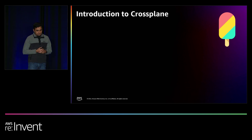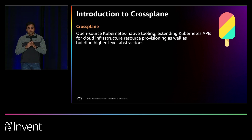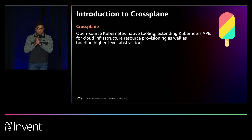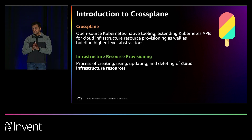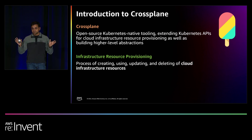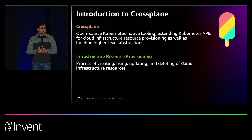Let's also do a quick introduction to Crossplane. Crossplane is an open source CNCF project which provides a cloud-native control plane framework for extending Kubernetes APIs for use cases such as infrastructure provisioning, but also for building higher-level abstractions and control planes. In terms of infrastructure resource provisioning, we use it for creating, updating, and deleting cloud infrastructure resources, but we're also planning to use it for creating self-healing control planes — infrastructure provisioning is just a starting point. How many of you have heard about or are using Crossplane already? That's a pretty good number.